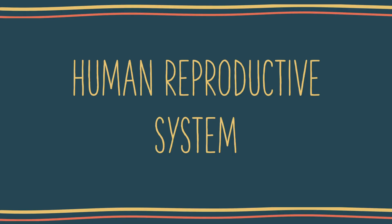Hi everyone, welcome back to my channel. In today's lesson, we are going to learn about male and female reproductive systems. Humans reproduce sexually. The human reproductive system consists of the male and the female reproductive system.